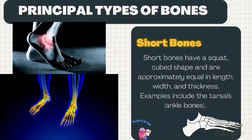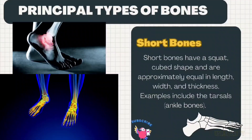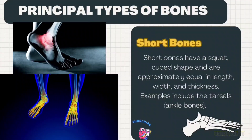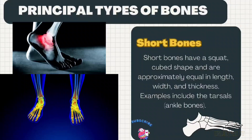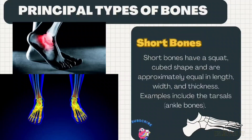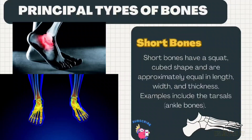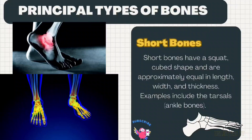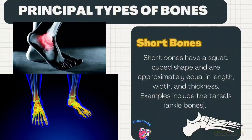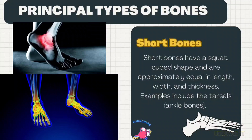Short bones have a squat, cube shape, and are approximately equal in length, width, and thickness. Examples include the tarsals, or the ankle bones.